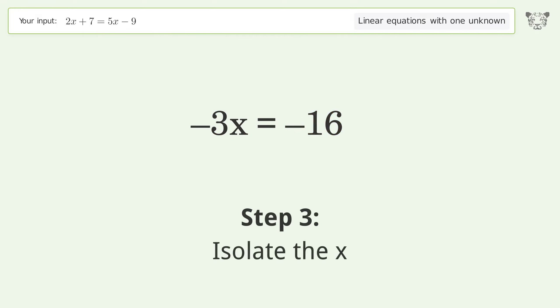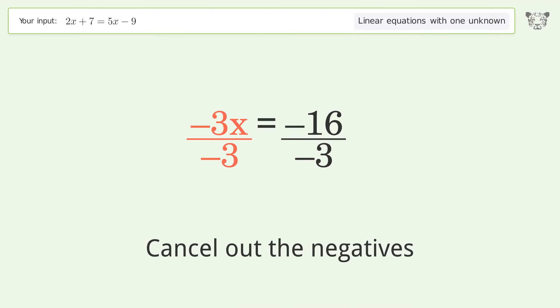Isolate the x. Divide both sides by negative 3. Cancel out the negatives.